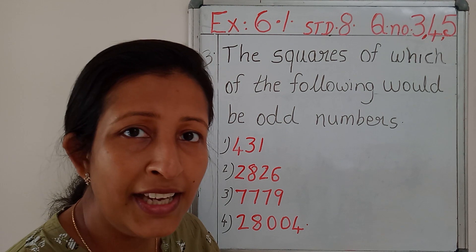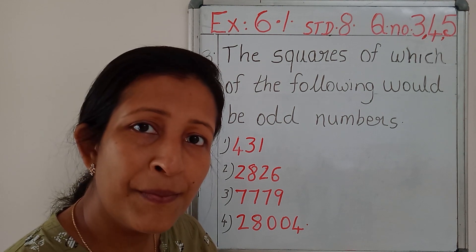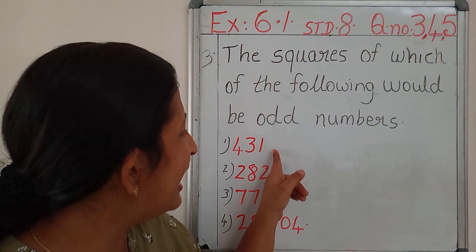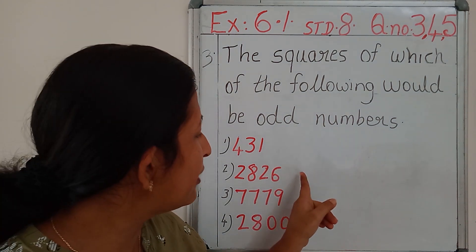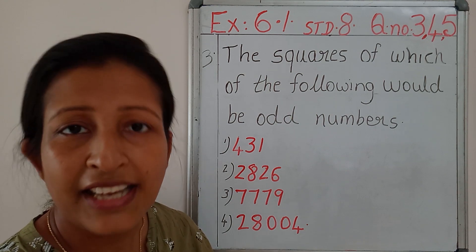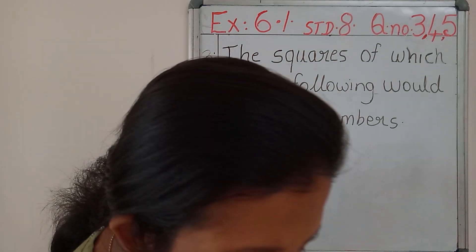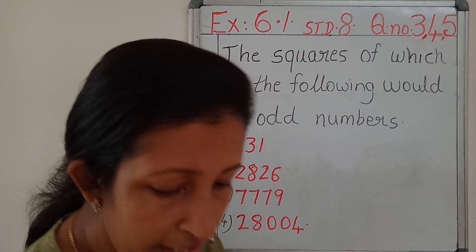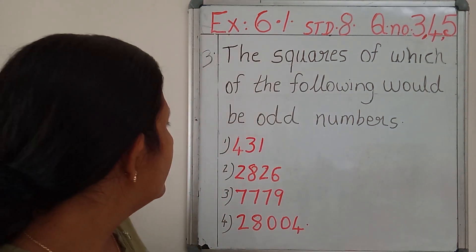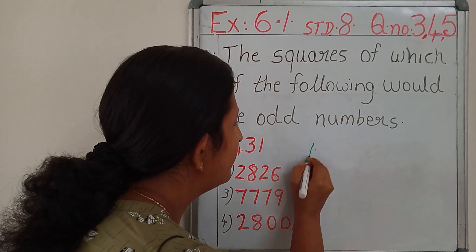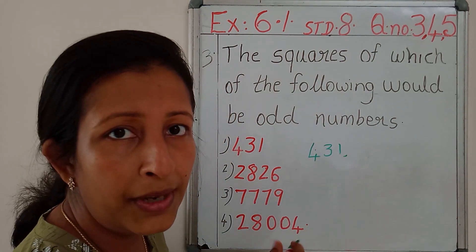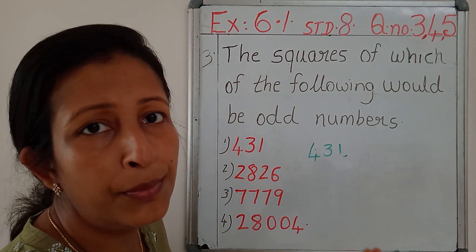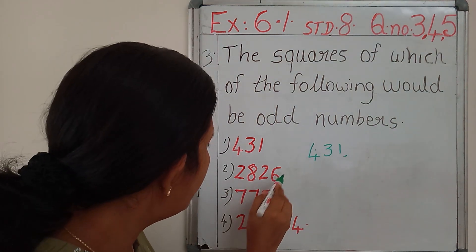We have studied a property. Do you remember that property? The squares of every odd number is an odd number. The square of every even number is even. 431, so we got the answer. What is our answer? 431 is an odd number, so its square should also be an odd number. Then this is even.